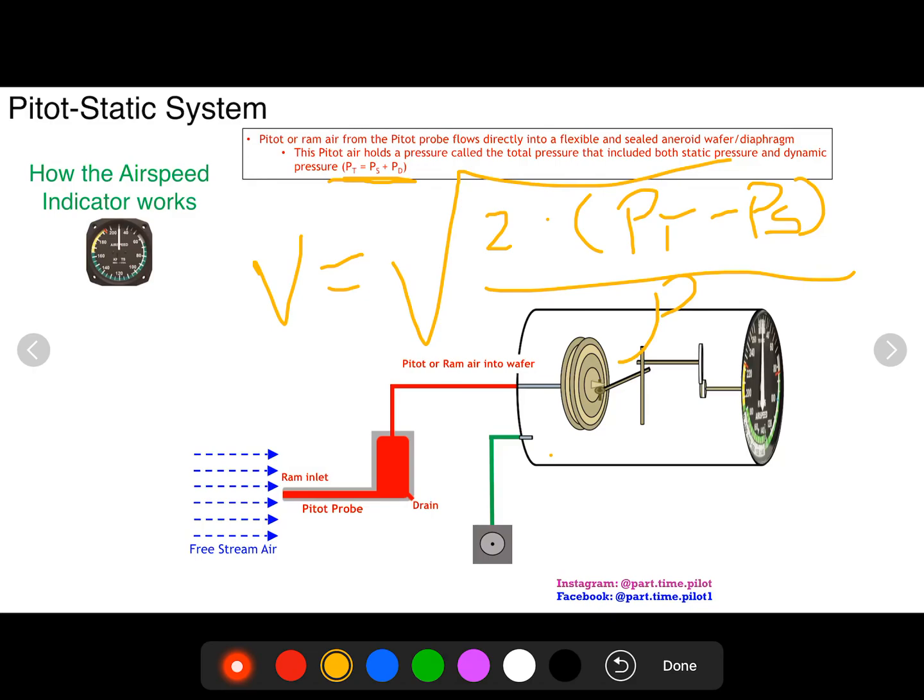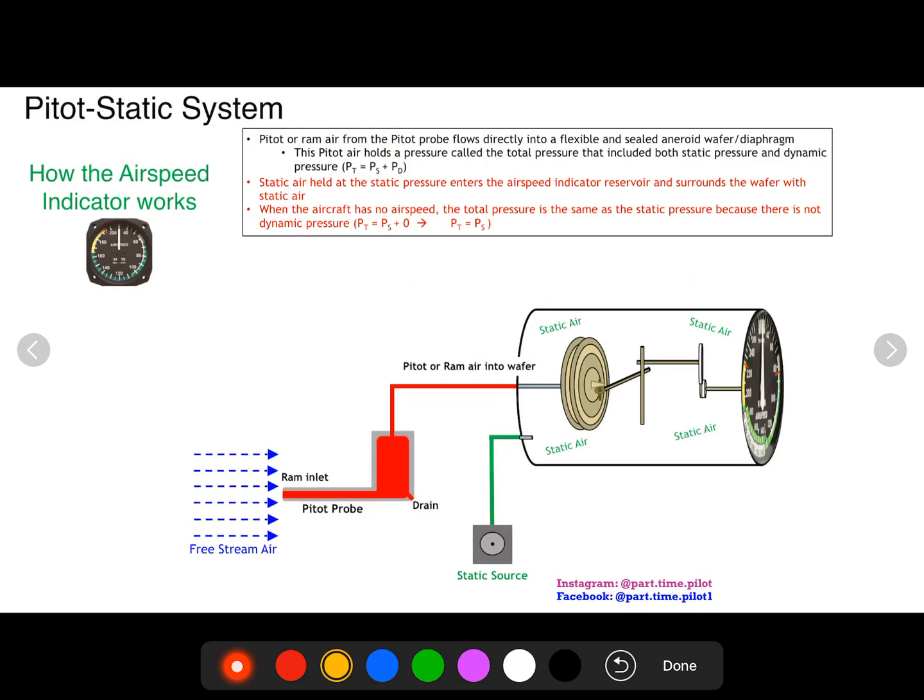So how does this work in an airspeed indicator? The airspeed indicator isn't some calculator doing these equations. The airspeed indicator uses another aneroid wafer or diaphragm, and unlike the altimeter that took in static air, this takes in pitot air. So it's completely sealed and the only thing inside of it is the pitot air from the pitot probe.